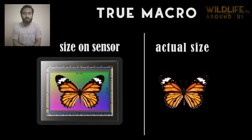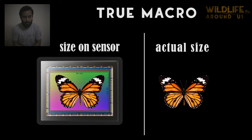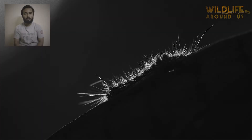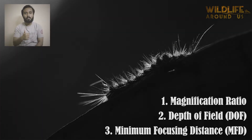To understand macro photography in a better way, we must understand three basic terms that we use time and again when discussing macro photography as a subject. These three terms are: magnification ratio, depth of field (DoF), and minimum focusing distance (MFD).